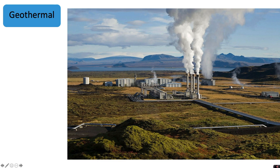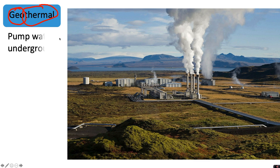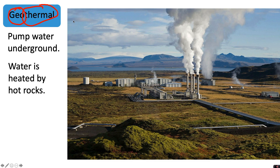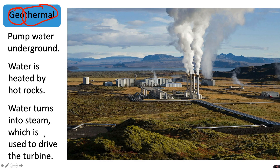The next renewable energy source is geothermal energy. Breaking down the word, 'geo' relates to the earth and 'thermal' to heat. With geothermal energy, you pump water underground where it is heated by hot rocks deep underground. The water turns into steam, which drives the turbine — just like fossil fuel power stations, we use steam to drive the turbine and turn the generator. But we are not burning any fuel, so we're not releasing any carbon dioxide into the atmosphere. You can only do this in places where you can access hot rocks underground.